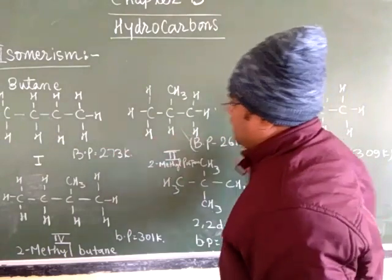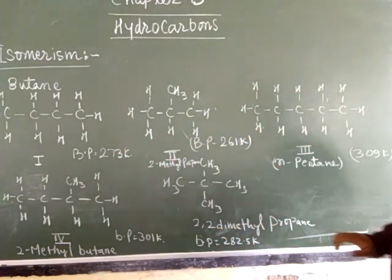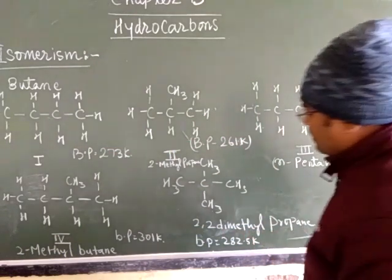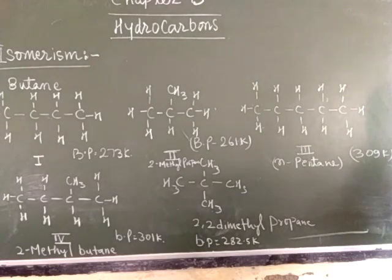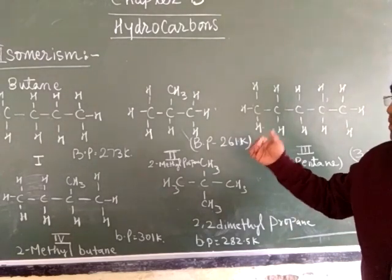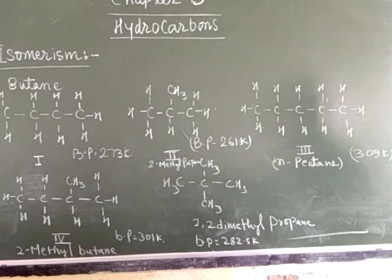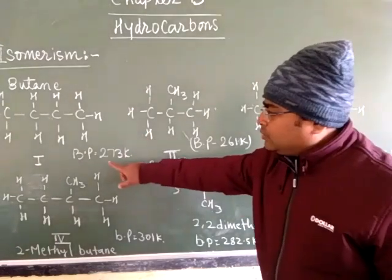But structures two, four, and five have branched chain isomers. Due to this we will find that they show different properties. In case of butane, the boiling point will be 273 kelvin.